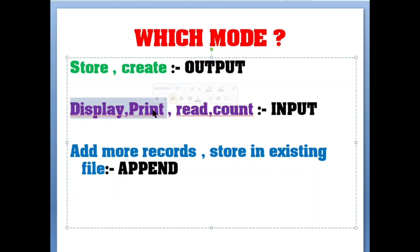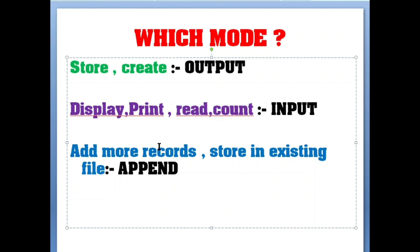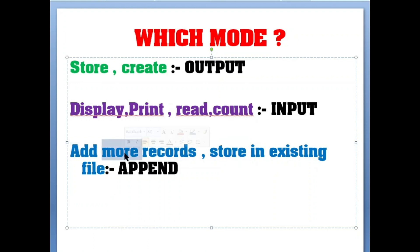For INPUT mode: if 'display,' 'print,' 'read,' or 'count' is mentioned in the question, use input mode. 'Read' means getting data from the file; 'display' means getting data from the file and showing it on screen. For counting records of a file, you also use input mode. If 'add more records' is mentioned, use APPEND mode — the file already exists and you want to add records.